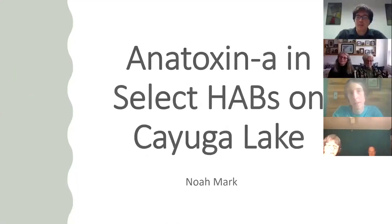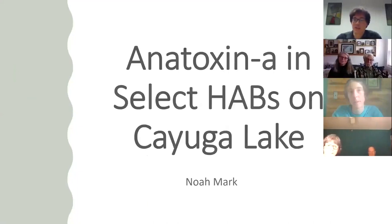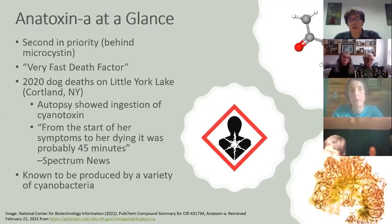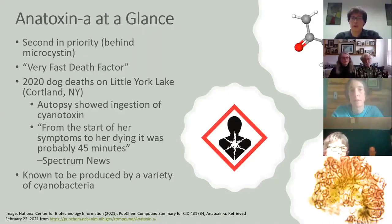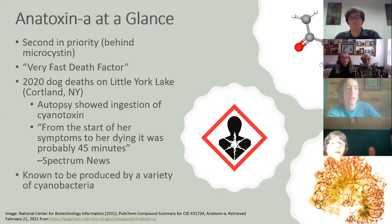Hi everyone. I'm Noah Mark, CSI's technical director. I typically work behind the scenes, but today I'm here to talk about the anatoxin-A work we conducted last summer. Of the cyanotoxins found in New York, microcystin tends to get the most attention, and rightfully so — it's been commonly found throughout water bodies in the state at alarmingly high concentrations. However, from a management standpoint, anatoxin-A might be considered second in priority because of its association with animal deaths. Before anatoxin-A was called anatoxin-A, it used to be referred to as the causing agent with very fast death factor.